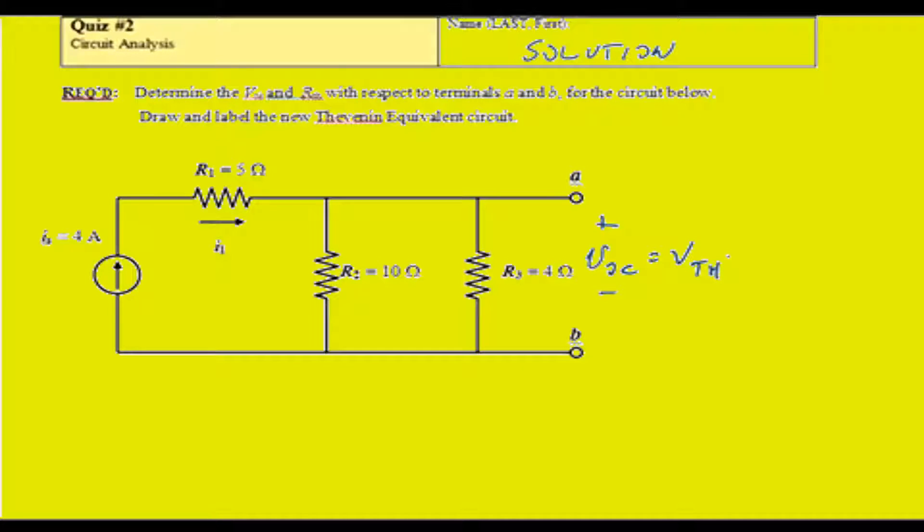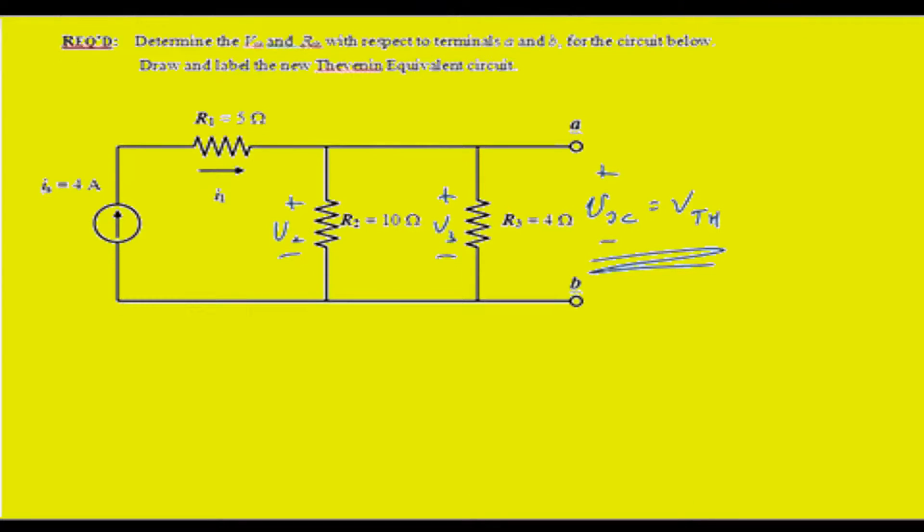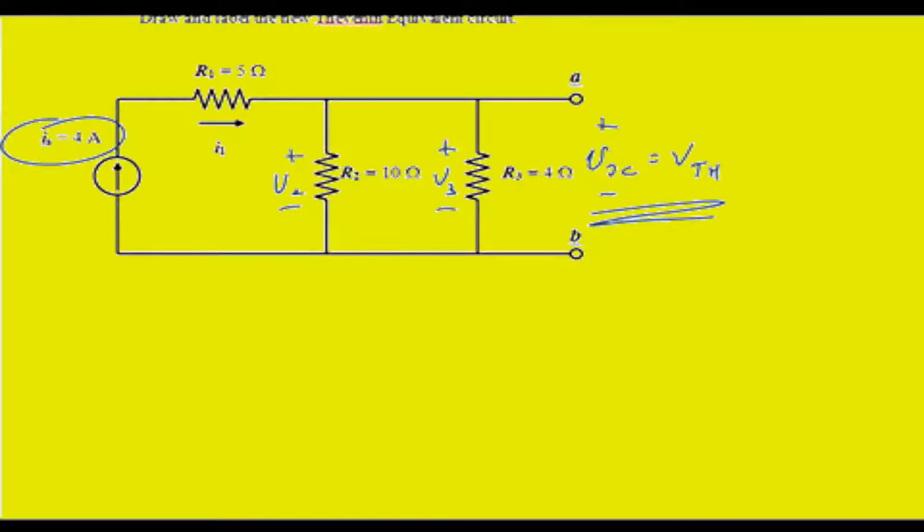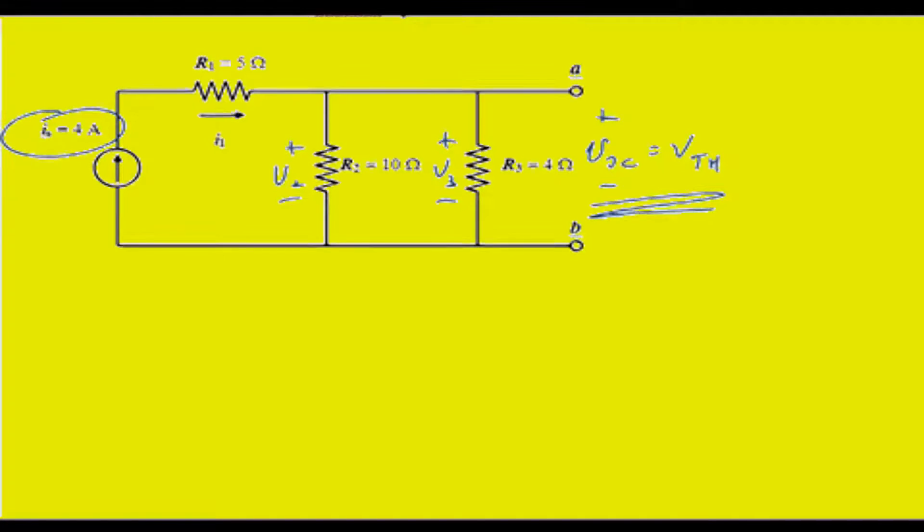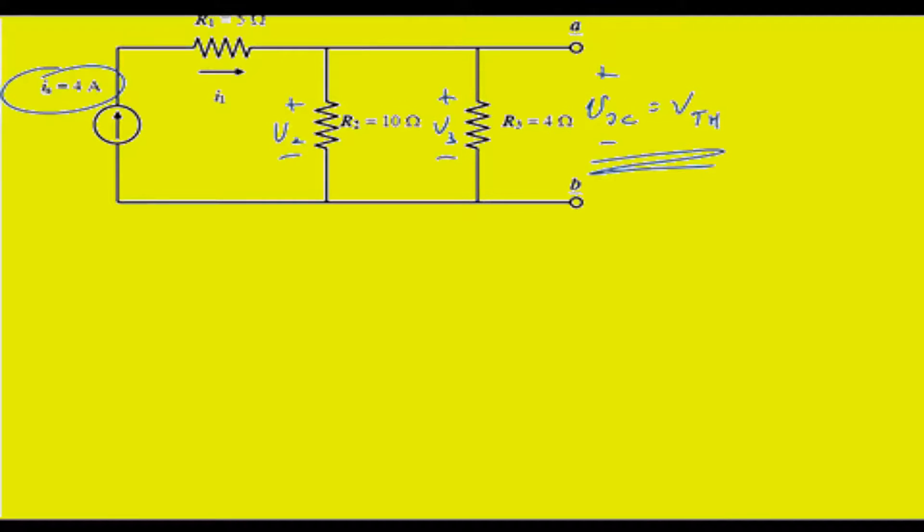By looking at the circuit, the voltage drop across resistor 2 and across resistor 3 are both equal to the open circuit voltage. So I'm going to combine these resistors in parallel, and because I know that the current flowing through the system is 4 amps, I should be able to get the voltage across A.